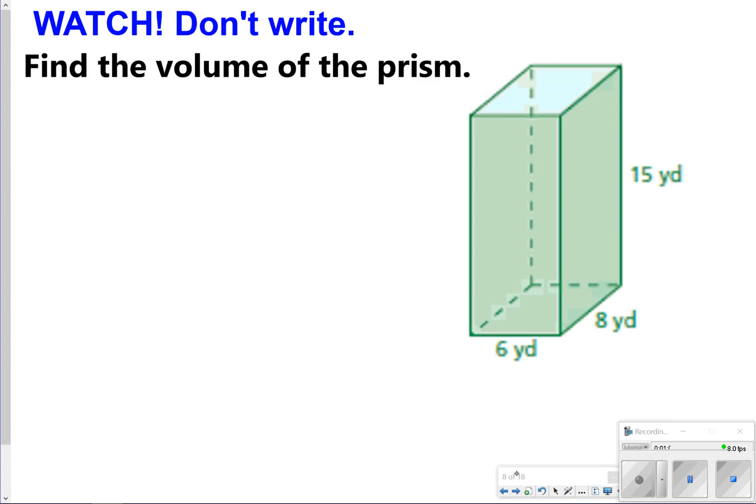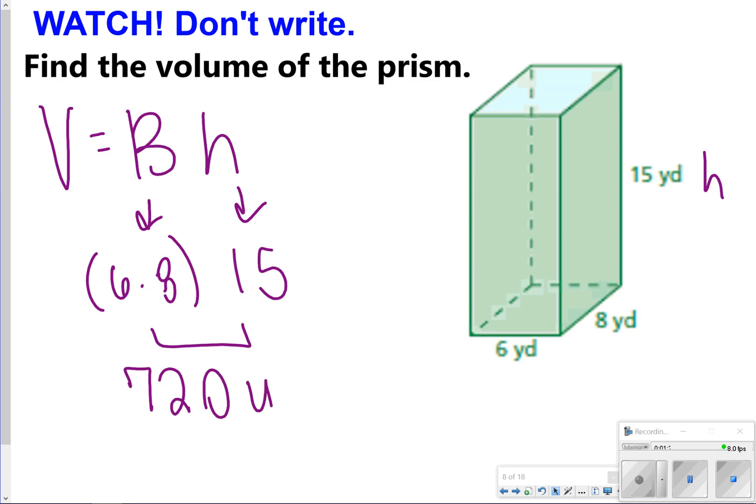All right, so the first thing you're going to watch me do is finding the volume of this prism. Again, you're finding area of the base times the height. For this one, the area of the base is 6 times 8, and the height is 15, right here. 6 times 8 is going to give me 48, and 48 times 15 is going to give me 720, so my answer will be 720 yards cubed.